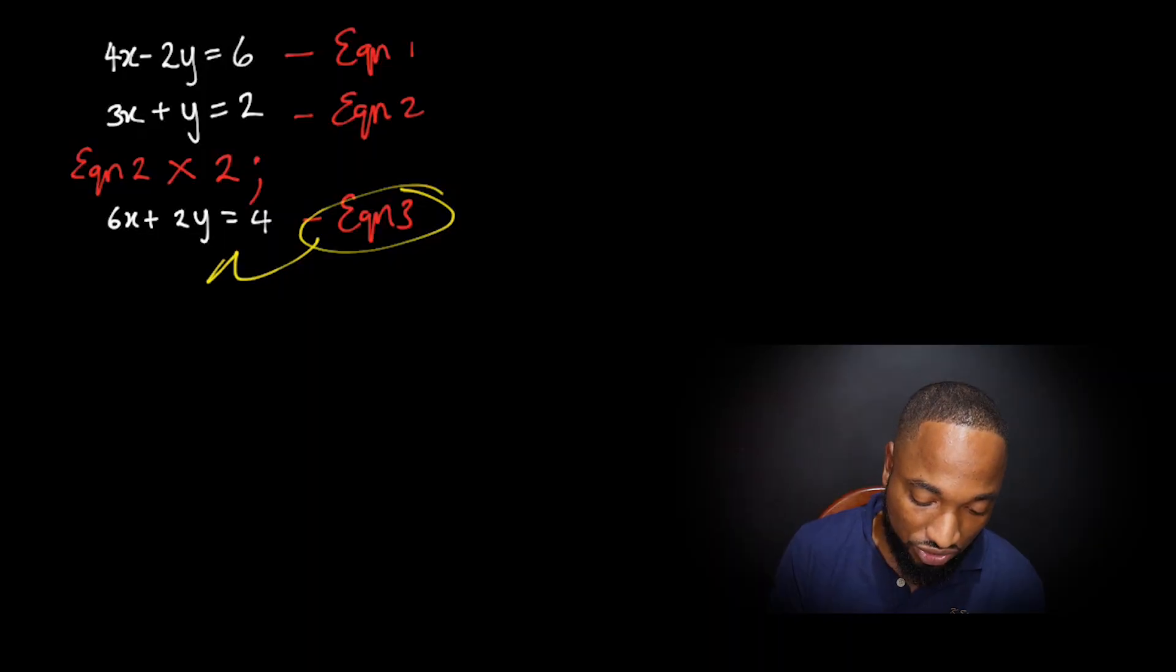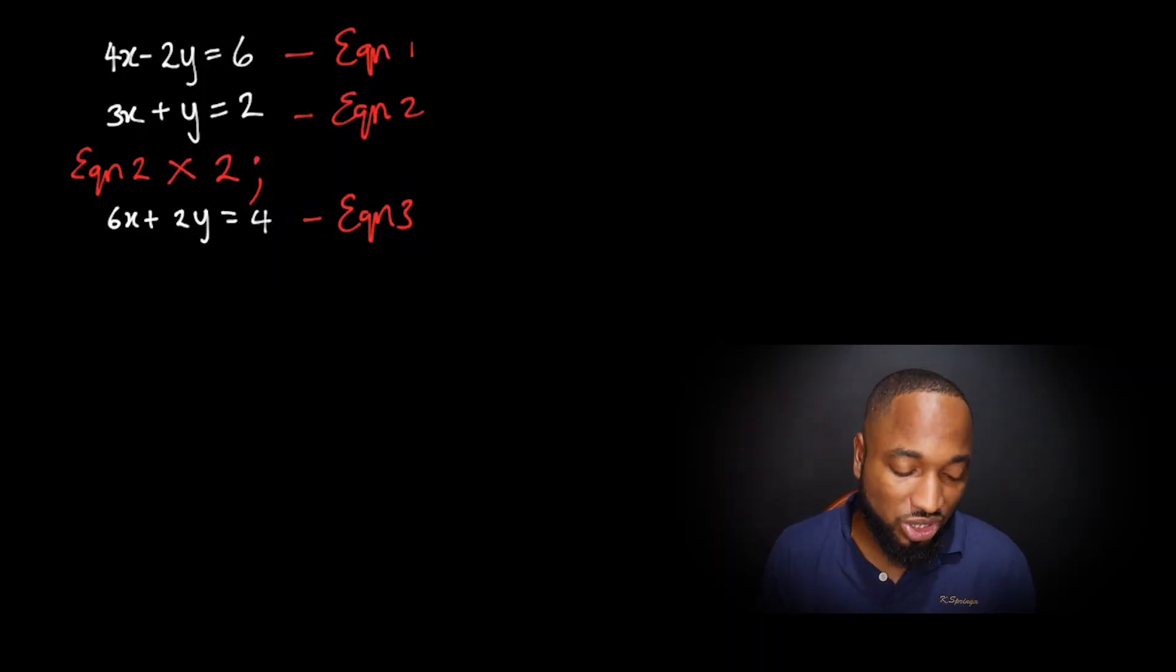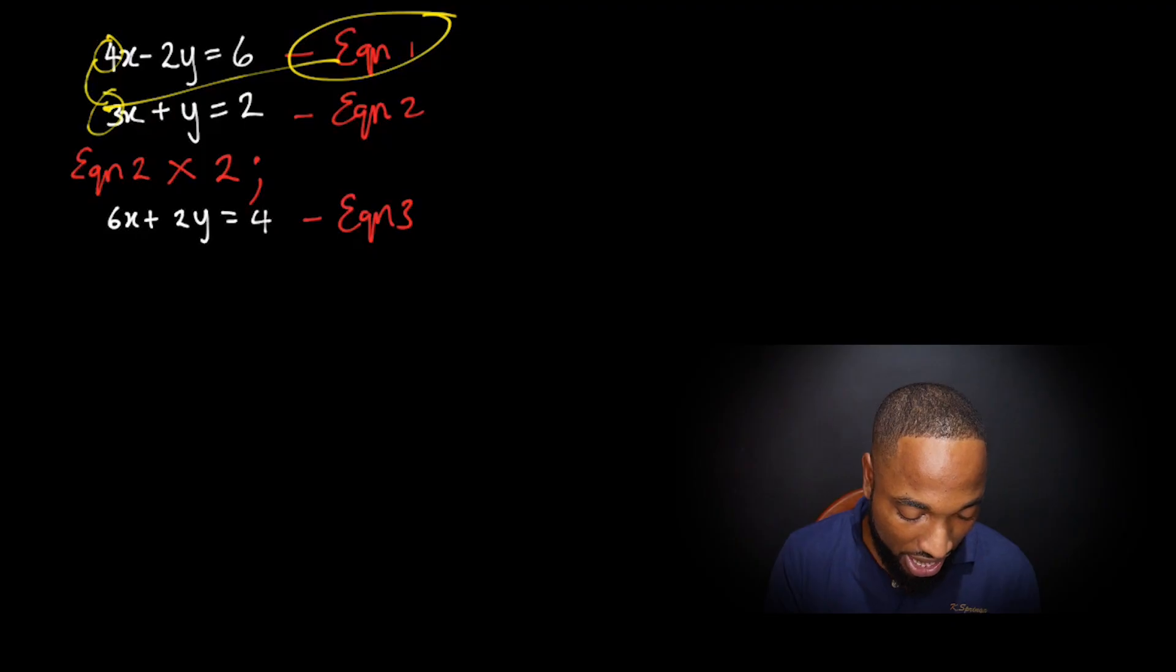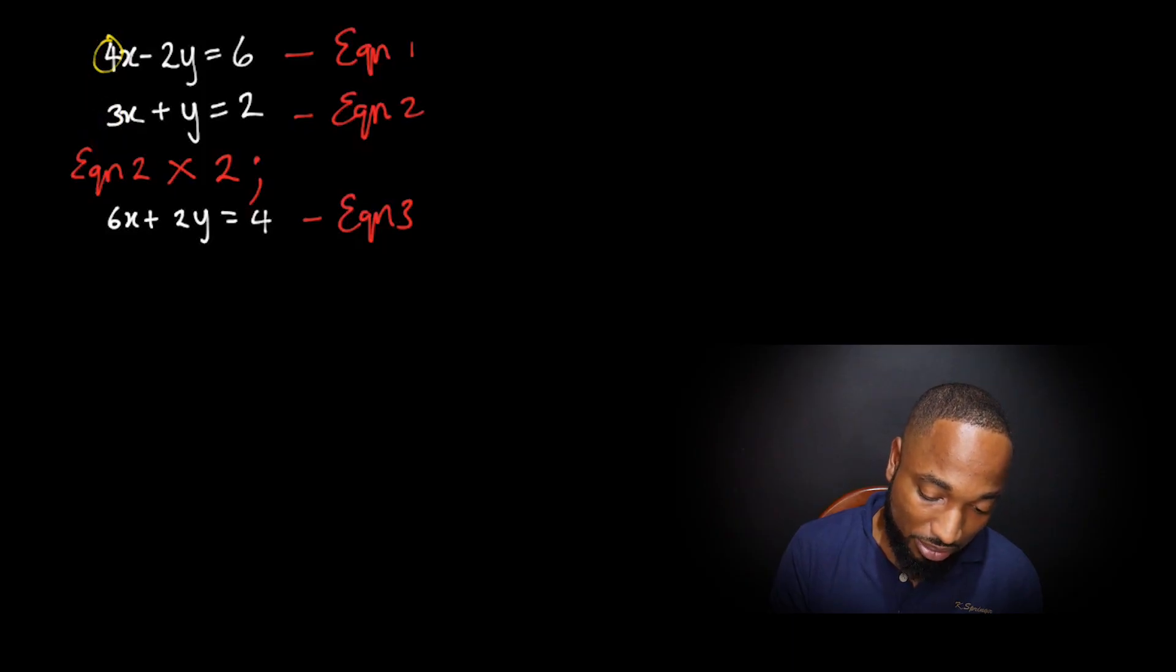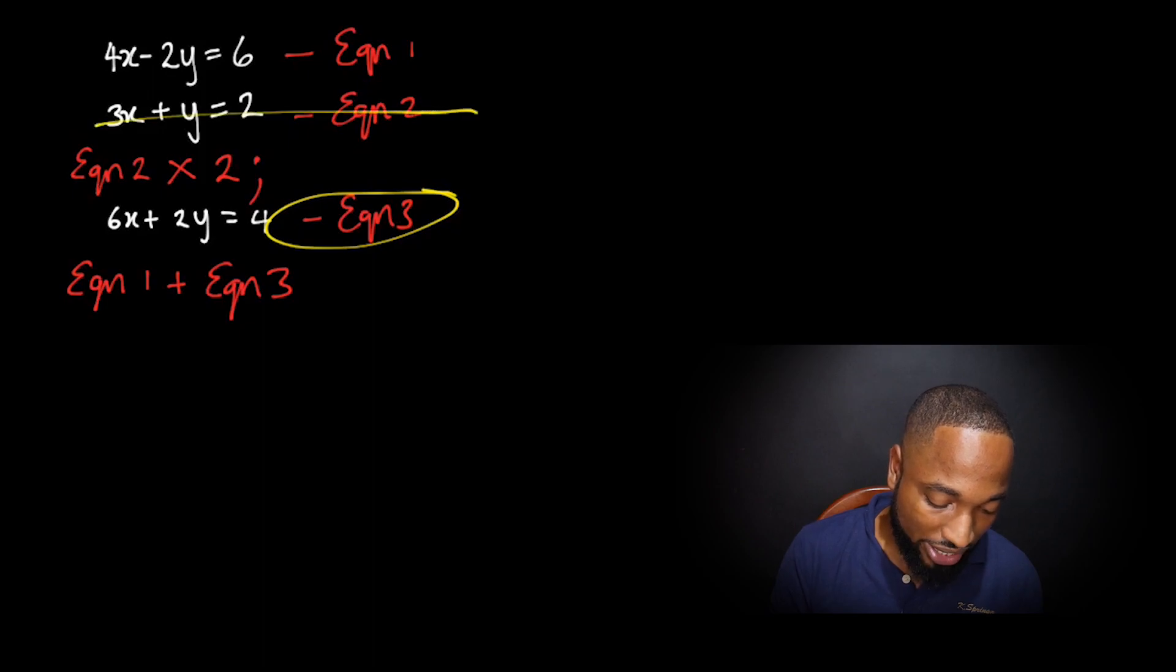I should also mention a lot of students would just find the LCM and multiply each equation. So equation 1 will get multiplied by 3 and equation 2 will get multiplied by 4—that way works as well. But in some cases you don't need to do all that multiplication. Like in this case I just multiply one equation by 2 and I'm good to go.